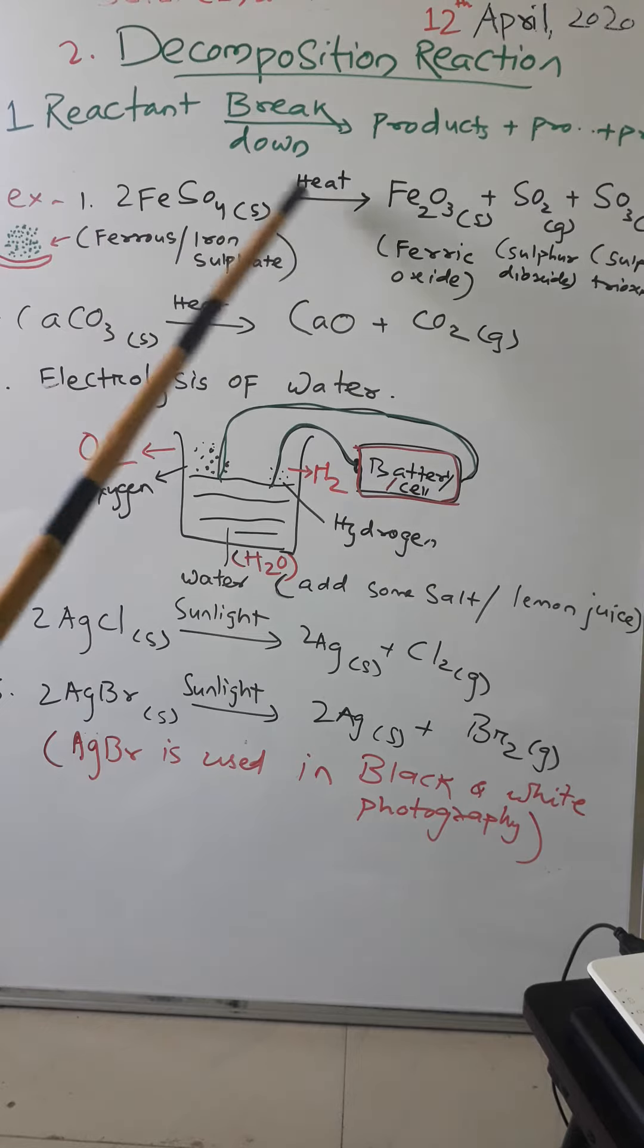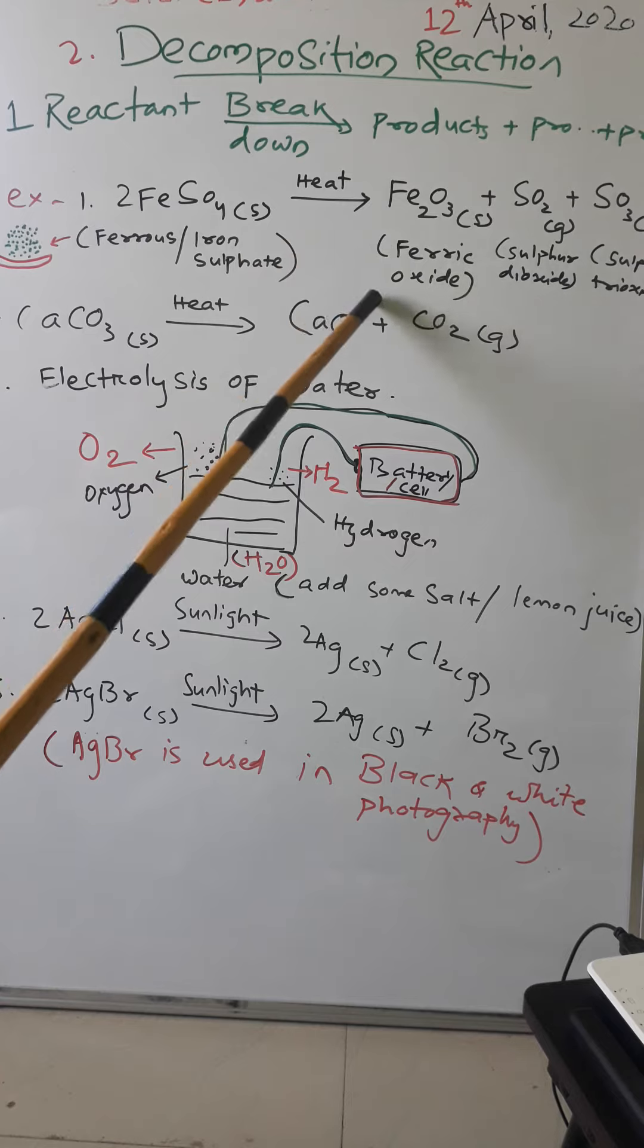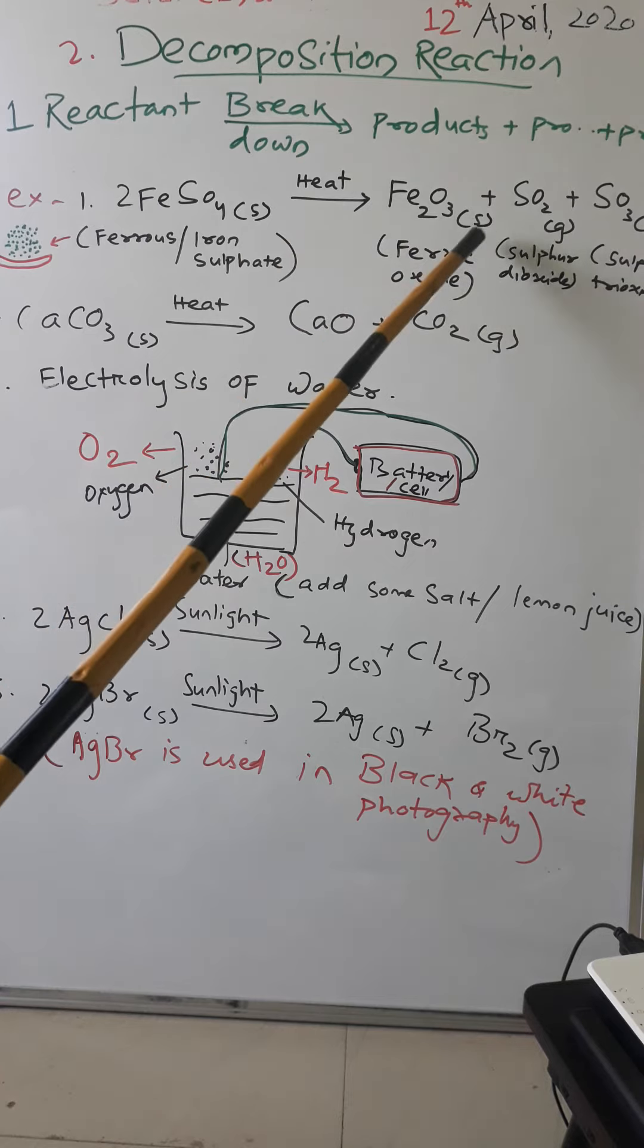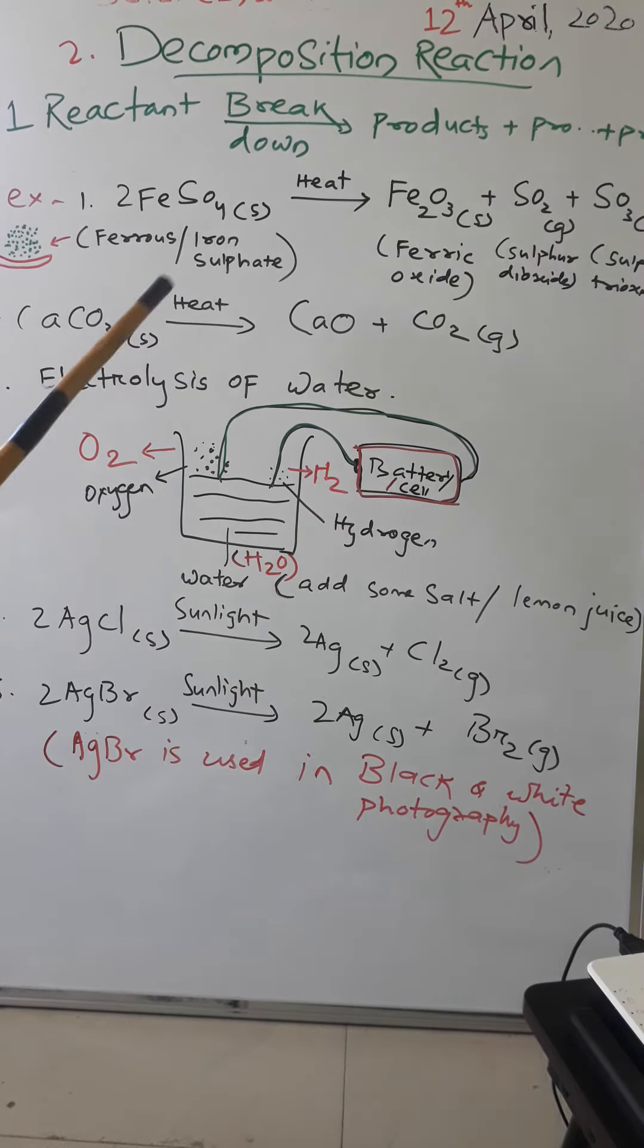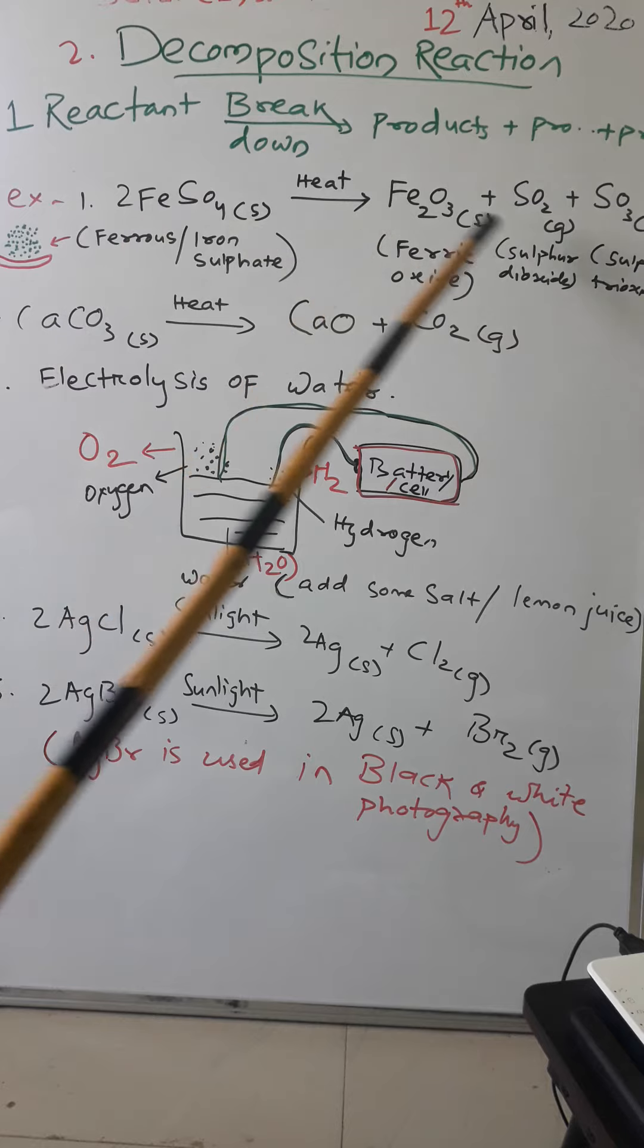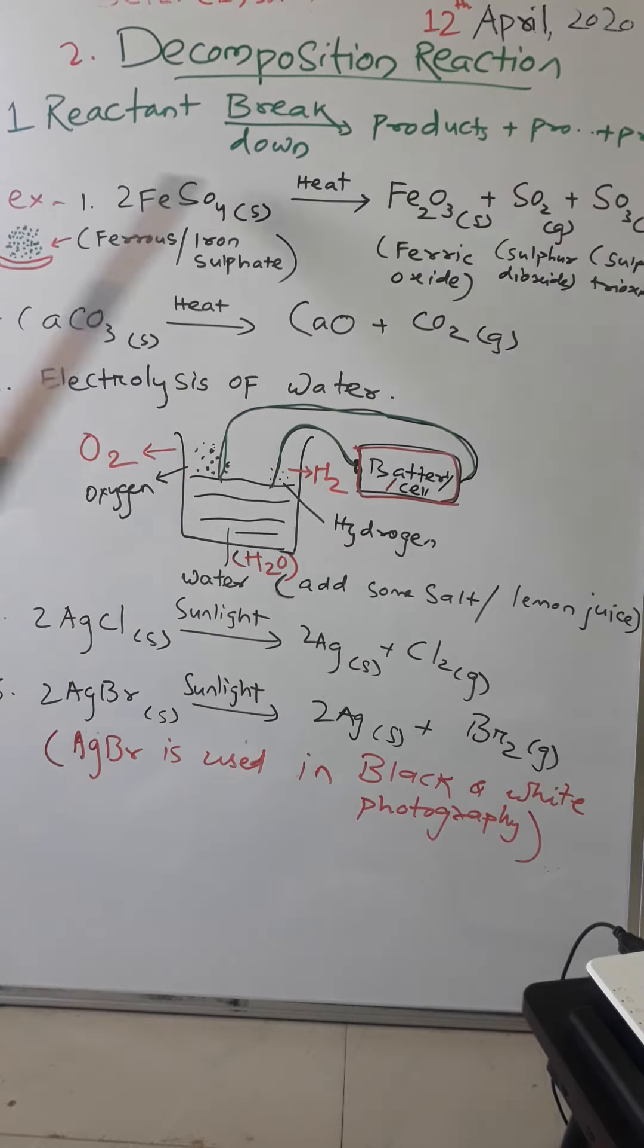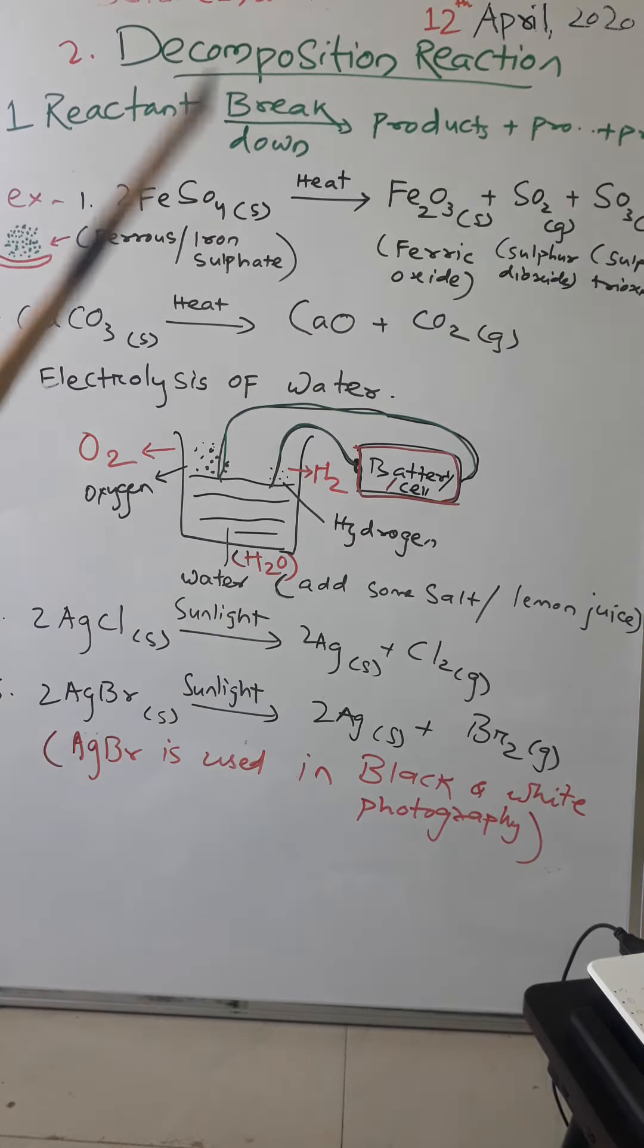So iron sulfate when we heat it gives us ferric oxide Fe2O3, which is a solid one. And next it produces two other gases, that is sulfur dioxide and sulfur trioxide. So when one reactant you are giving it heat and it is producing a lot of products, then this type of reaction is called a decomposition reaction.